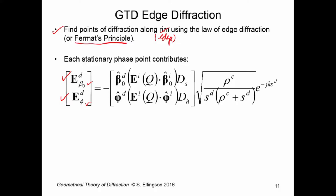Note that phi here is not the Cartesian phi — it's not the angle associated with the XY plane. It's an angle that exists with respect to the diffraction geometry. Beta-naught is just the other relevant angle. We have two contributions: a phi component and a beta-naught component, each with associated unit vectors. The contribution in those directions is related to the incident field E superscript I evaluated at the point of diffraction Q, via the dot product with respect to the ray-fixed coordinate system attached to the incident ray.